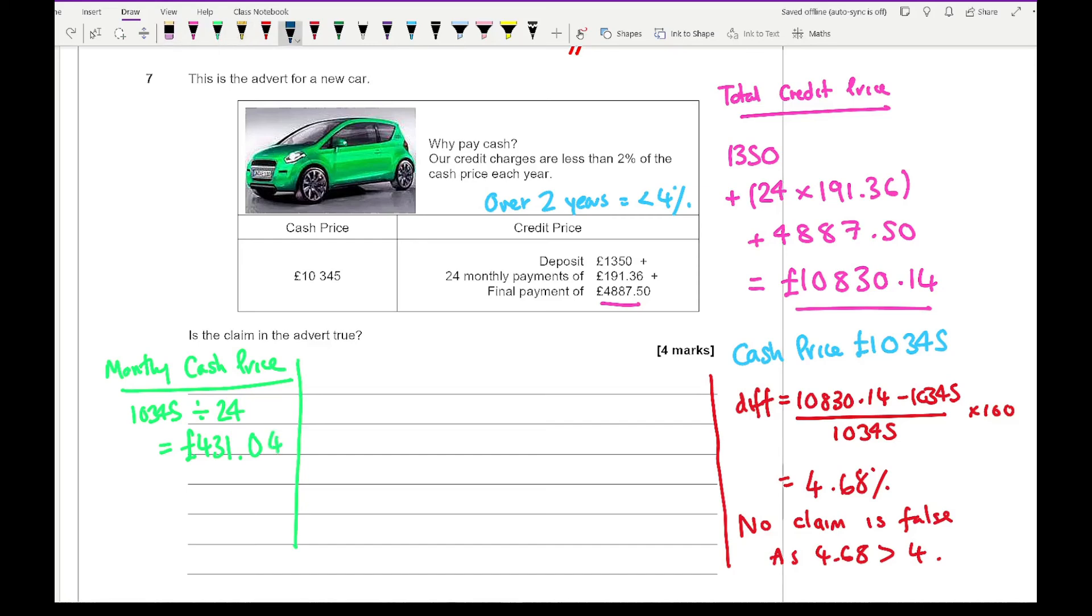Looking at the credit price, the total amount payable is £10,830.14. If I divide that amount by 24, so £10,830.14 divided by 24, that comes up to a monthly payment of £451.26.